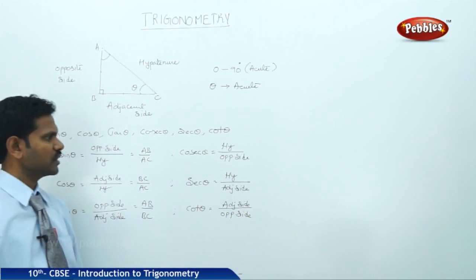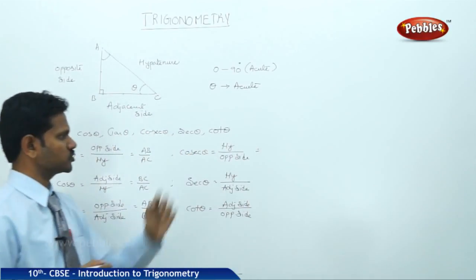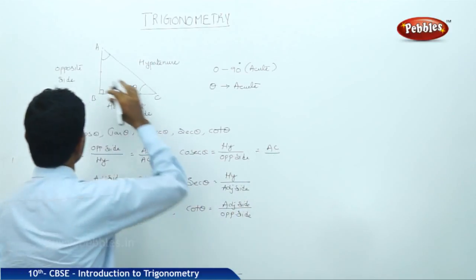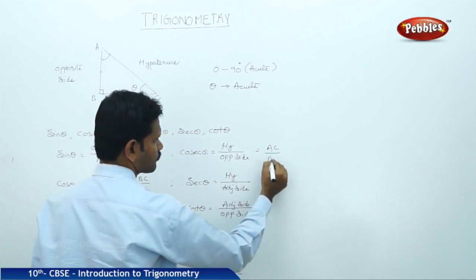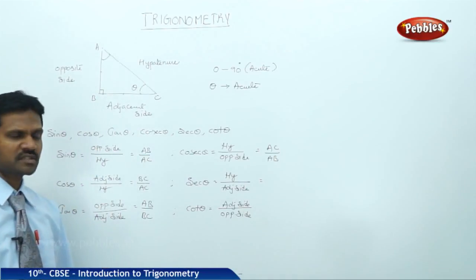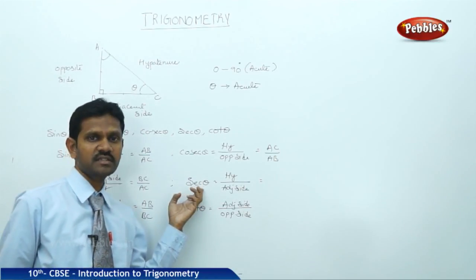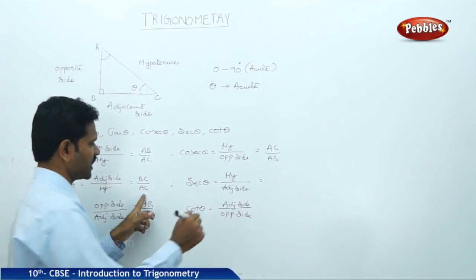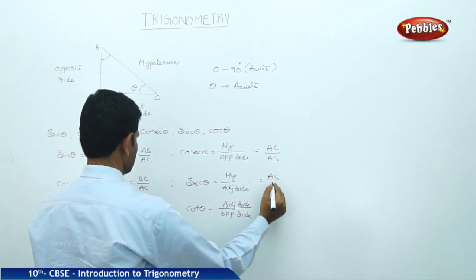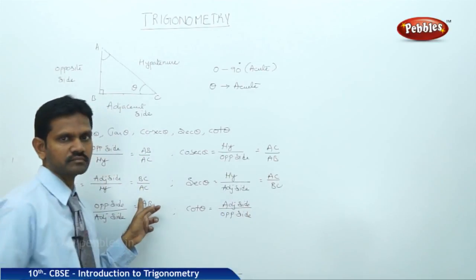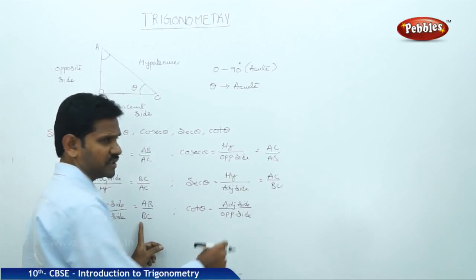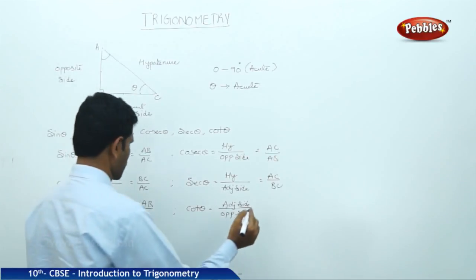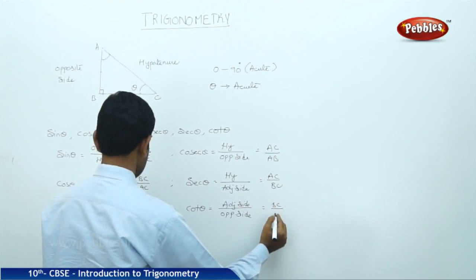From the diagram: cosecant theta = hypotenuse AC by opposite side AB. Secant theta is the reciprocal of cos theta — reciprocal of BC/AC, which is AC/BC. Cot theta is the reciprocal of tan theta — reciprocal of AB/BC, which equals BC/AB. So we have now discussed the definitions of the six trigonometric functions in terms of the sides of the triangle.